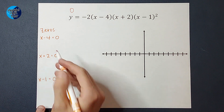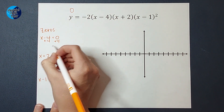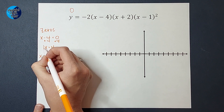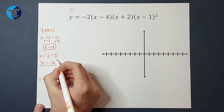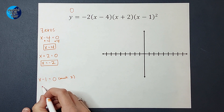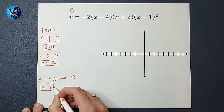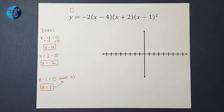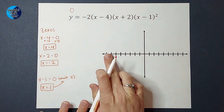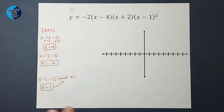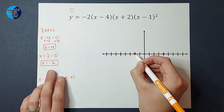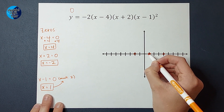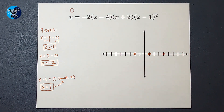Now I'm going to solve for these zeros. For x minus 4 equals 0, I add 4 to both sides and get x equals 4. On the next one, I subtract 2 from both sides and get x equals negative 2. And on this one, I add 1 to both sides and get x equals 1 — and remember, that answer is really there twice. So now we're going to graph those zeros on our x-axis. My graph crosses at 4, at negative 2, and at 1.